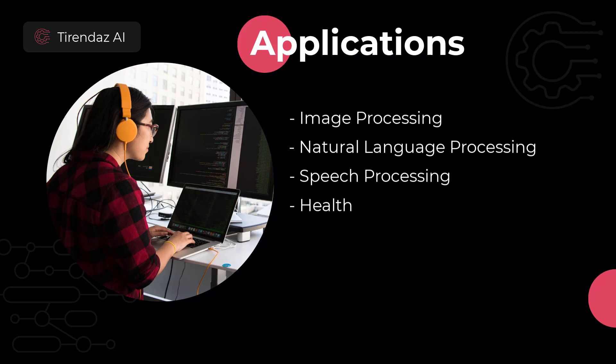Another use of deep learning is automation. With this technique, you can make projects in areas such as robotics and automatic control systems. You can also use deep learning in finance — for example, for topics such as financial risk analysis, portfolio management, and credit risk prediction. Deep learning has many uses, but lastly let's look at agriculture. You can use deep learning for projects such as detecting plant diseases and classifying and predicting crops.